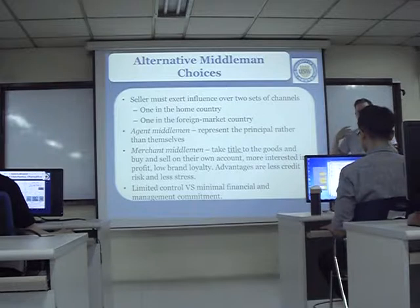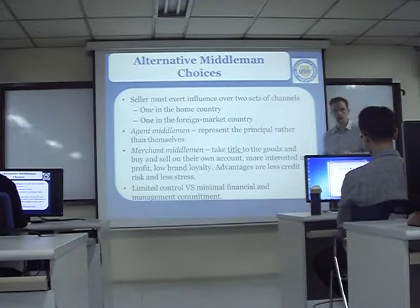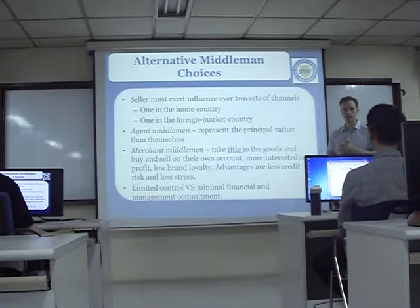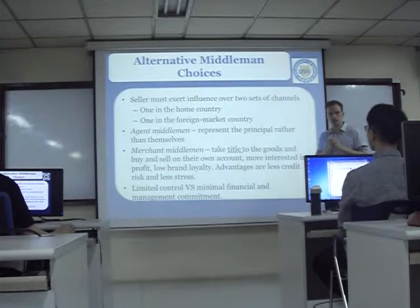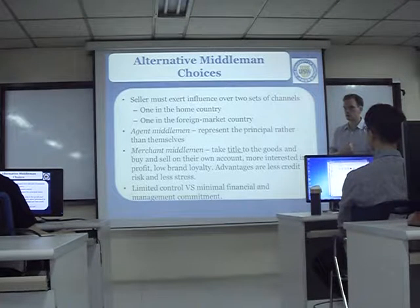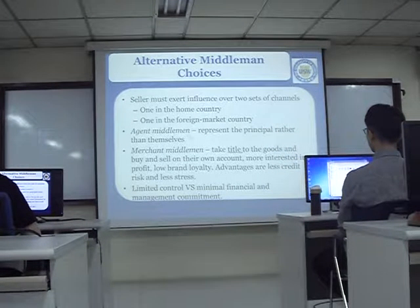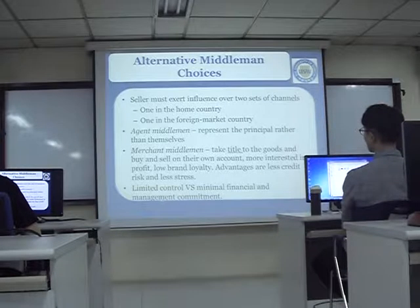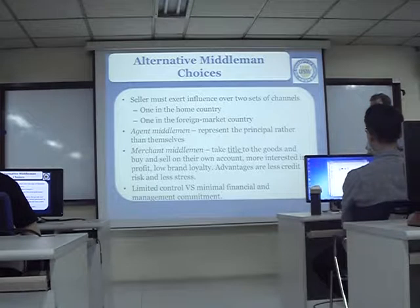Maybe the merchant decides not to advertise our product, or if our product isn't selling very well, they decide to stop buying and selling it in that country. But the agent won't have that problem — even if your goods aren't selling well, the agent is working for you and will continue trying to sell the product, do the advertising, and try hard. So with the agent we have control, but with the merchant middleman, no control. However, with the agent we have more financial and management commitments — we have to help them with advertising and pay their salary.